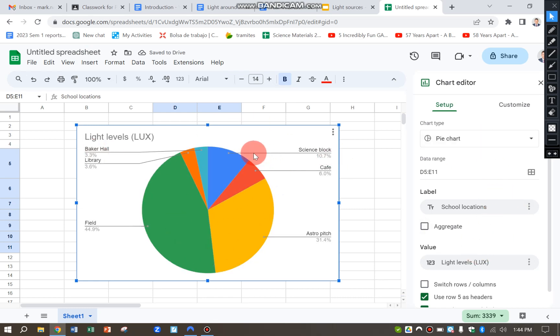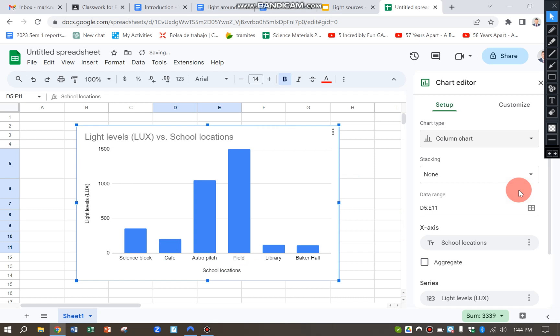And here you can see it's made a pie chart. What I really want to compare is a bar chart. So I'm going to click there. I'm going to go to chart type and a column chart or bar chart there.